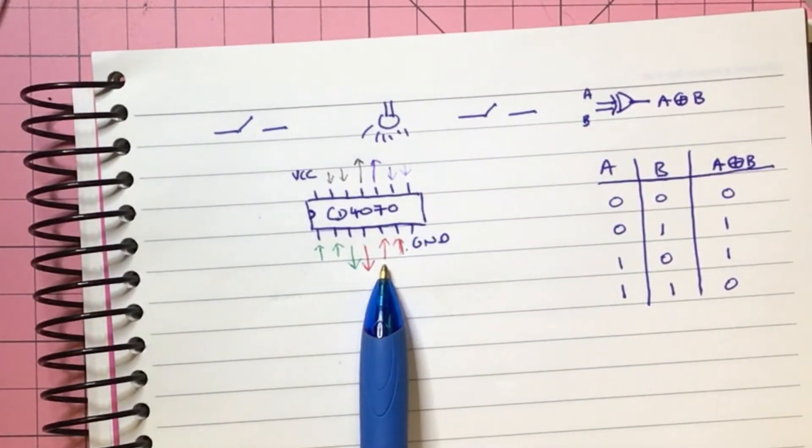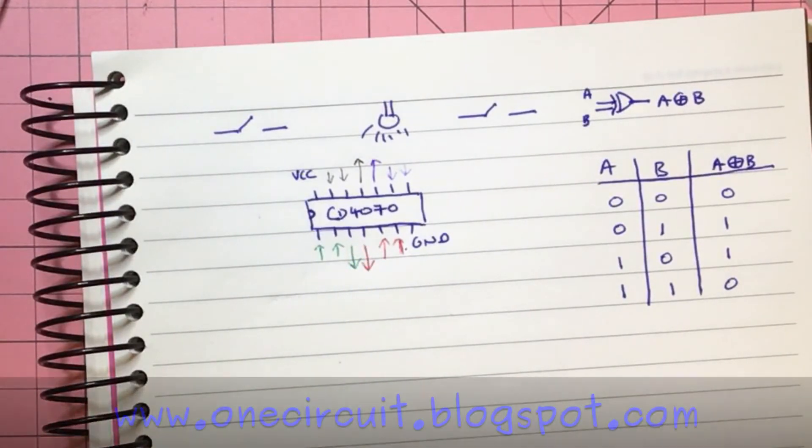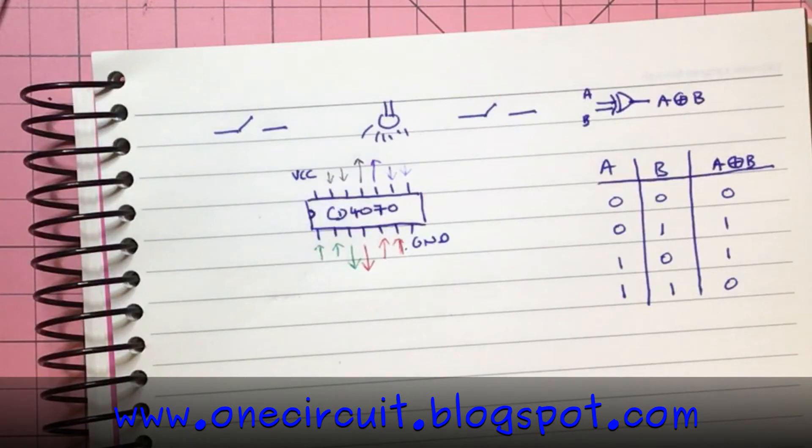So theoretically we could tie one switch to one of these inputs and the other switch to the other input, and then we can flick the light on and off as we see fit. Let's breadboard it up and we can see what it looks like.